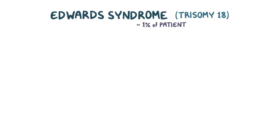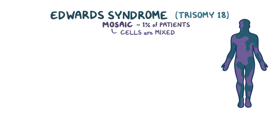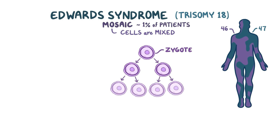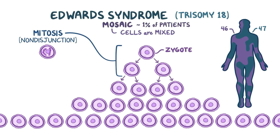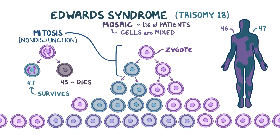About 1% of patients are mosaic, meaning their cells are mixed — some have 46 chromosomes, and some have 47. After conception, you've got this one cell called the zygote that needs to develop into a human, so it has to divide over and over again, producing every kind of cell in the body. Each of these divisions is called mitosis. Non-disjunction of chromosome 18 can also happen during mitosis, in which case you'd end up with one cell that has an extra chromosome 18 and one without — one with 47 total chromosomes and one with 45. The cell with 45 chromosomes isn't able to survive, but the one with 47 does, and continues to replicate and produce more cells with 47 chromosomes. Mosaic patients usually have less severe symptoms compared to patients who have trisomy 18 in every cell in their body.